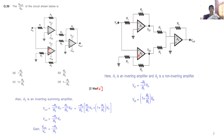Next, consider A2. What is the output of this operation amplifier, V_naught_2? Since A2 is a non-inverting operation amplifier, V_naught_2 = (1 + Rf/R1)·V_in. Here Rf = R2, so V_naught_2 = (1 + R2/R1)·V_in.